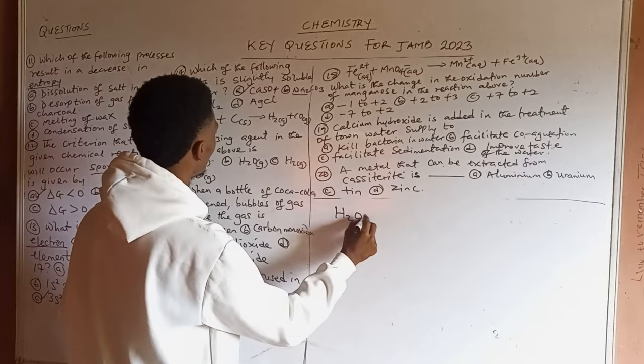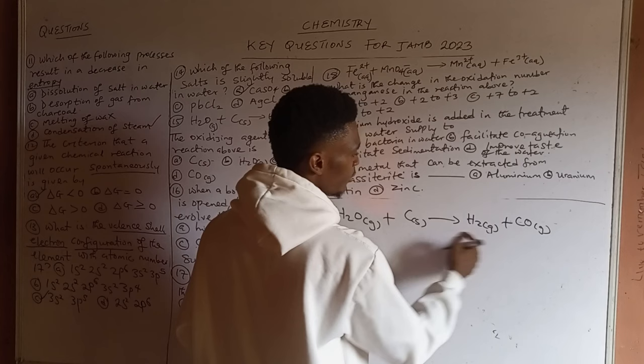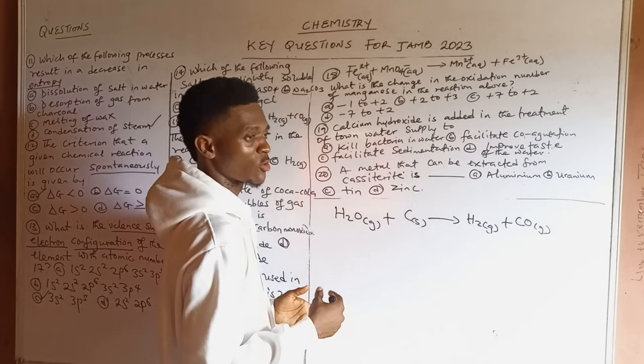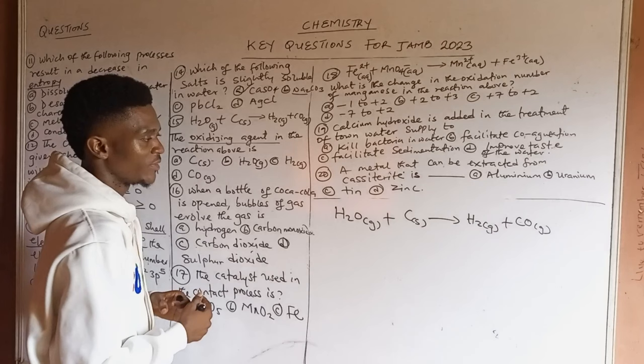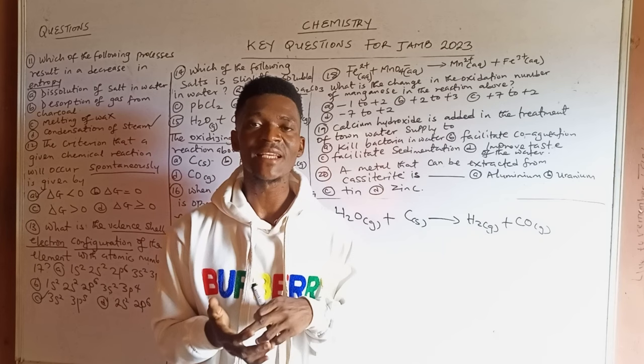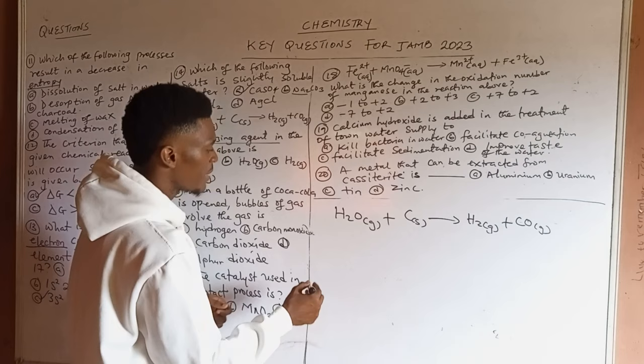Question 15 involves identifying the oxidizing agent in the reaction: H2O(g) + C(s) → H2 + CO. This is the water gas reaction. Remember: oxidizing agents are agents that are reduced at the end of the reaction, while reducing agents are agents that are oxidized. Oxidation is loss of electrons (OIL) and reduction is gain of electrons (RIG) — use the mnemonic OIL RIG.